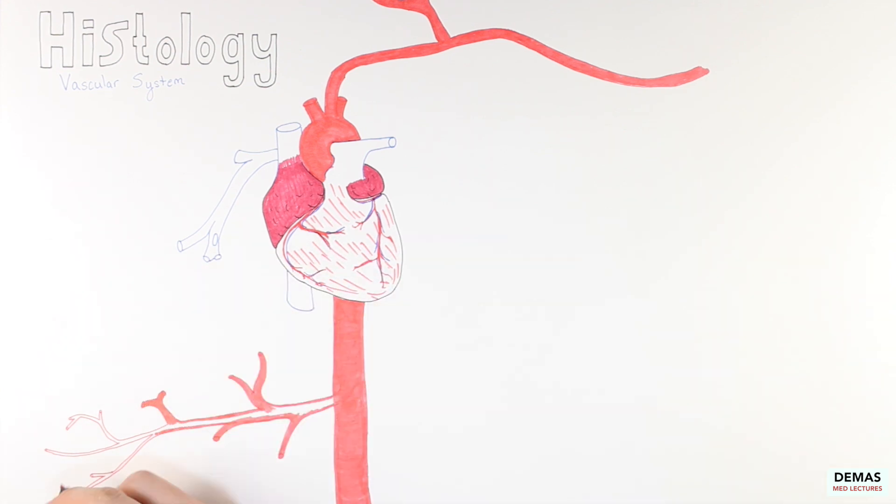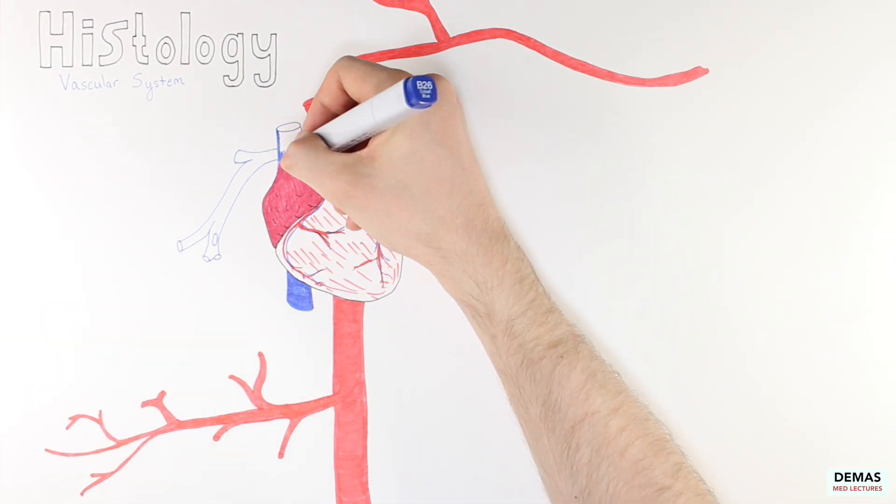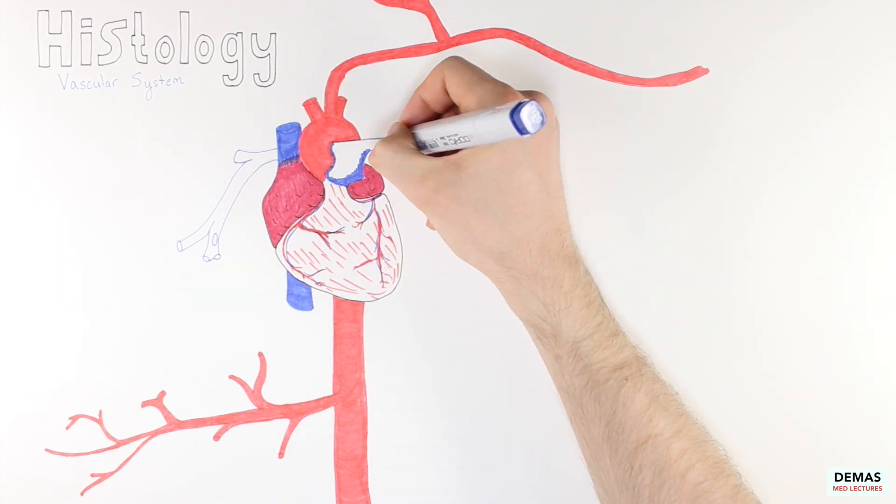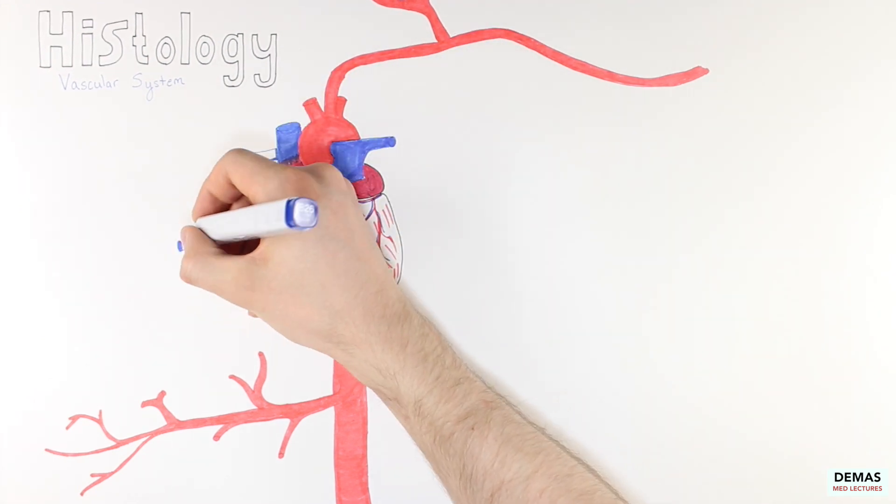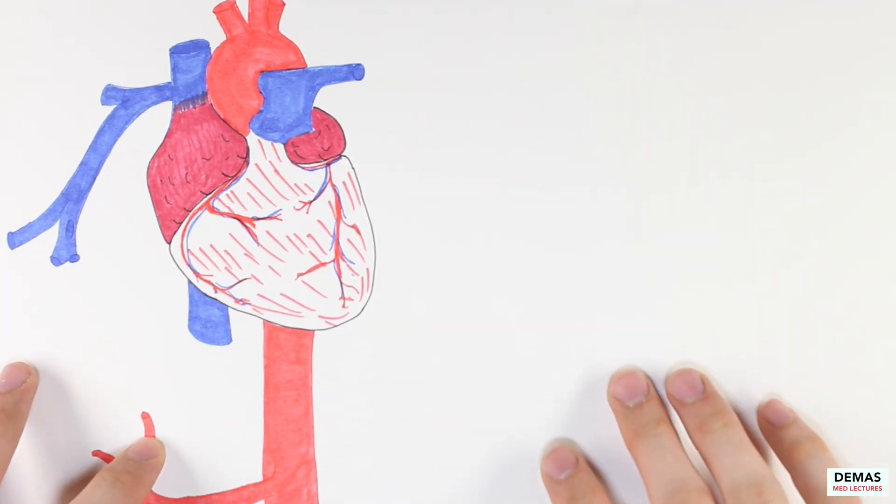Arteries carry blood away from the heart, while veins carry blood back to the heart after passing through capillary beds. For this reason, it means that the pressure in the arteries is going to far exceed the pressure in the veins. Therefore, arteries and veins must adequately accommodate for this difference in blood flow dynamics.